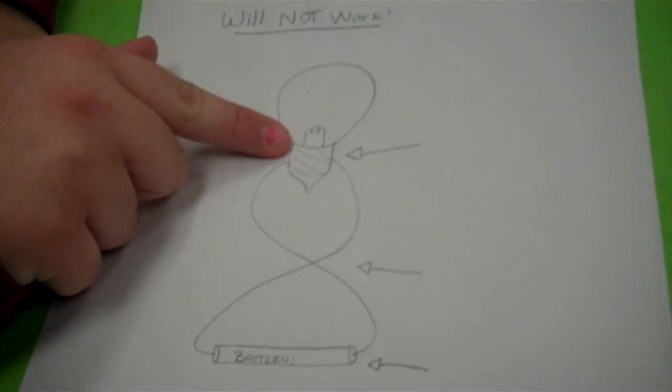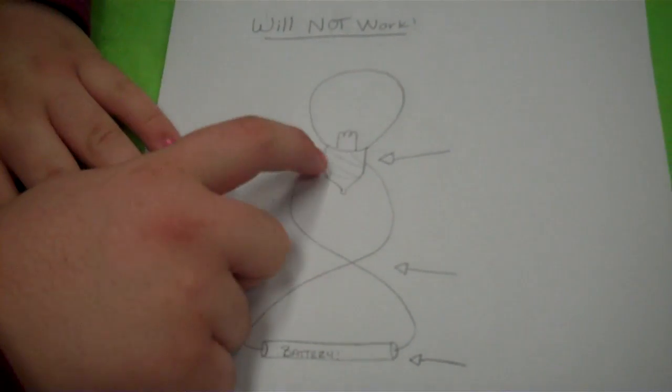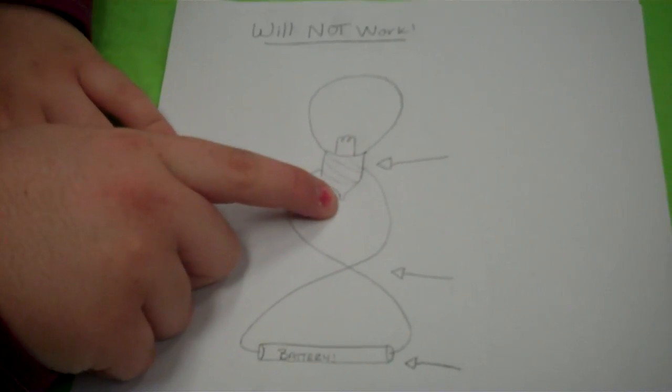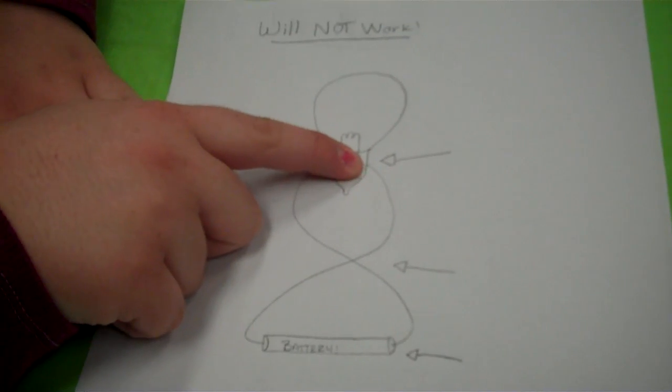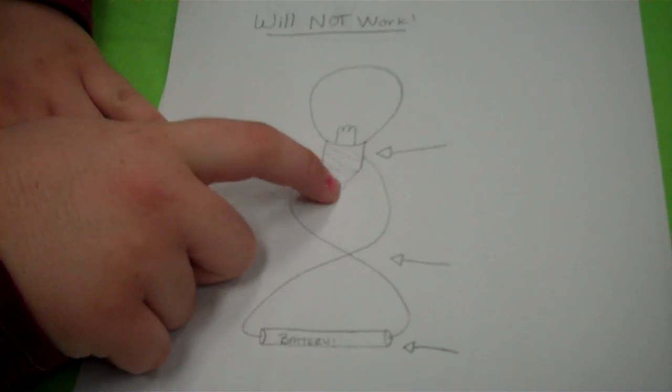As you notice on a standard incandescent light bulb there is a threaded part and a little nub at the base. You want to make sure that one wire is attached to the threaded part and one wire is connected to the little base.